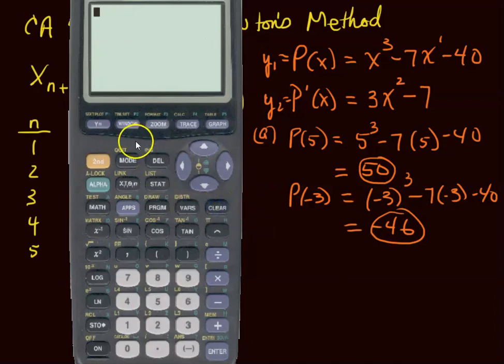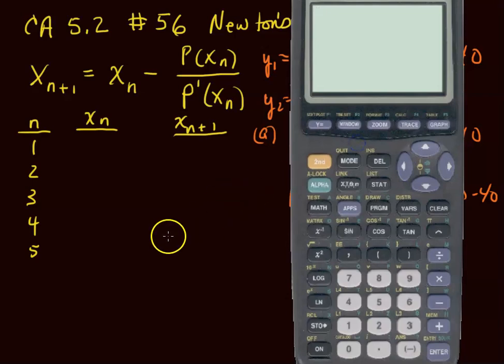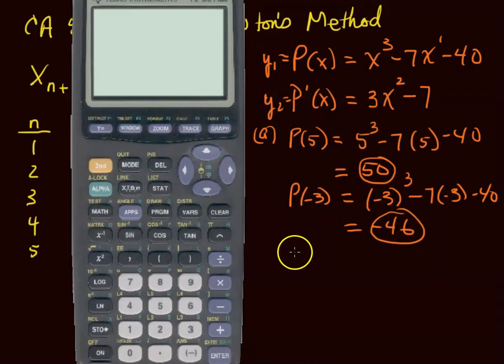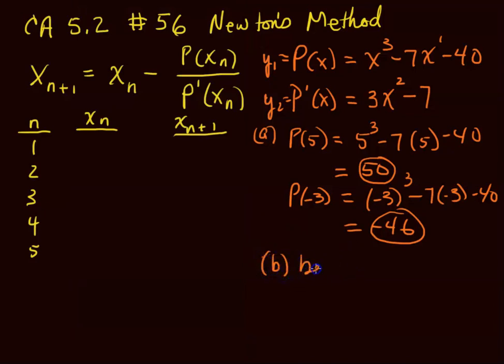But the best thing about this is when we perform our Newton's method on this stuff. These two points give us a positive and a negative. So part b tells us between a 5 and a -3 is a zero. Polynomials don't have any holes in them so it's got to connect these two points. Somehow it's got to cross the x-axis. And that's the zero that we're looking for.